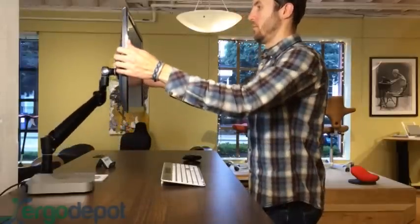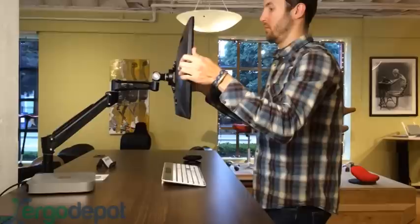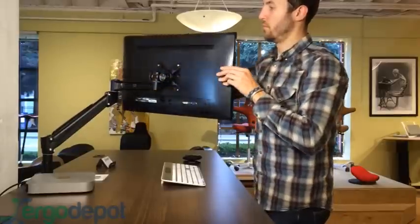You can make minute adjustments easily, and in getting your monitor off the desk surface, you're also unlocking a lot of desktop real estate, so you can have stacks of paper or books or your phone or your light. You can fit more on the space. You're utilizing that space better.